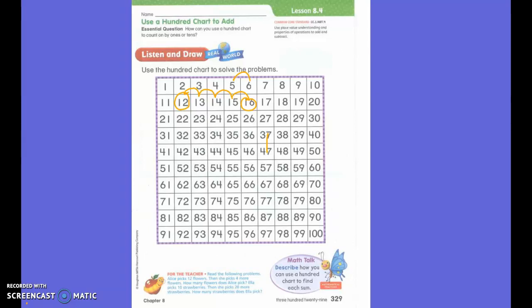You're right. We moved 1 space for every 4 that we counted until we got to 4. And we happened to stop on 16. So we know that 12 and 4 more spaces equals 16.